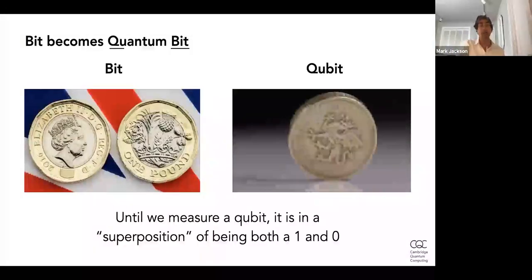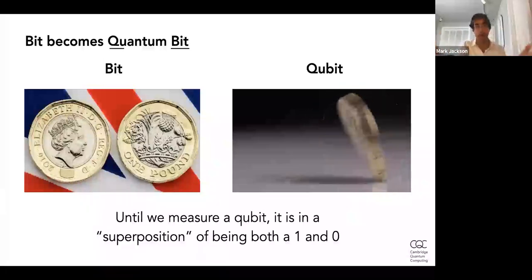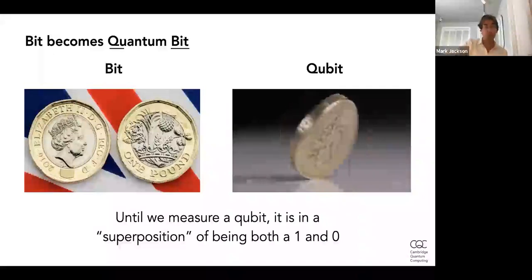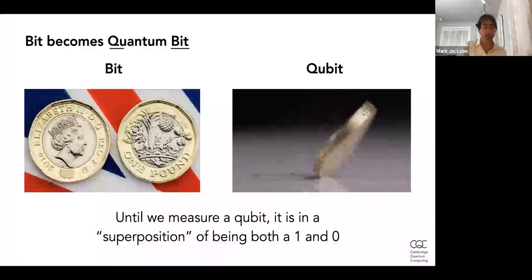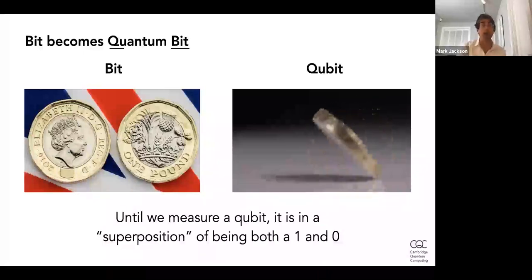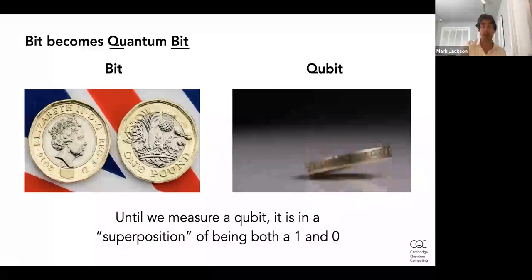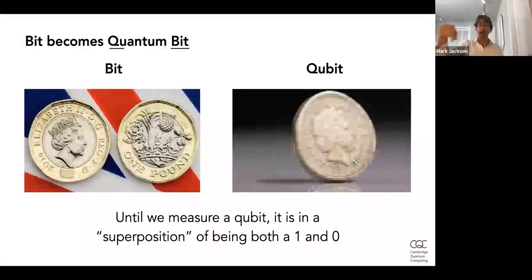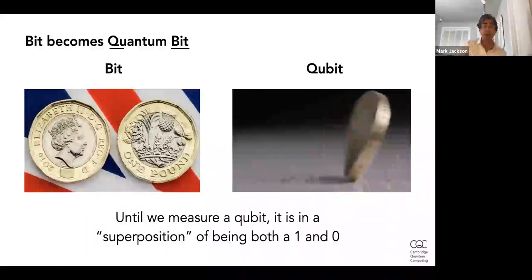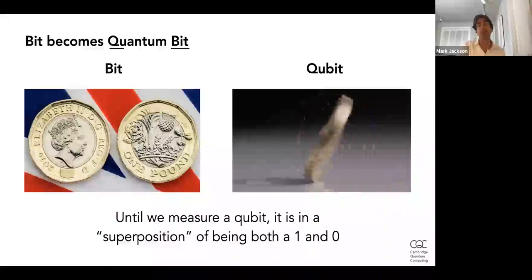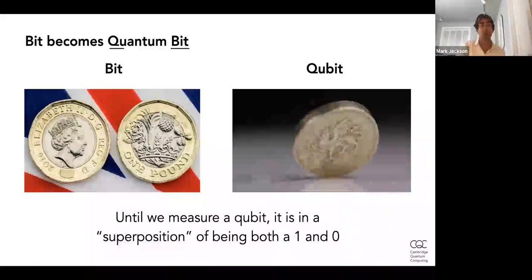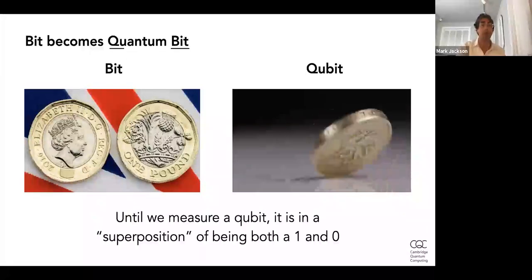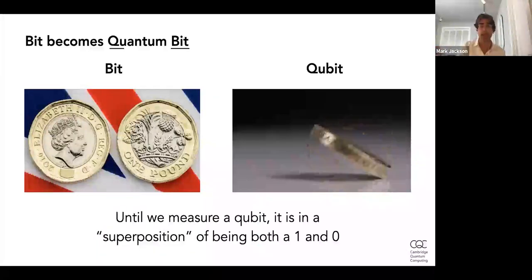To explain what a quantum computer is, I like to compare it to a coin. Normal computers work with bits — binary digits — which are like a coin on a table: it's either heads or tails, definitely not both. But a quantum computer works with something called a quantum bit, or qubit. A qubit can actually be heads and tails at the same time. It's like a spinning coin — until you actually measure it, it's in an indeterminate state, a little bit heads and a little bit tails. When you measure it, you collapse it into one or the other, and it's probabilistic which one it ends up in. The technical term for being in both states at the same time is called superposition.